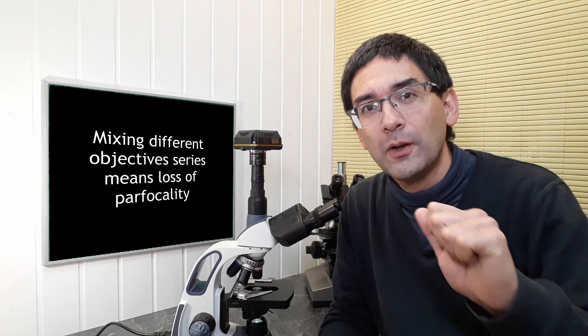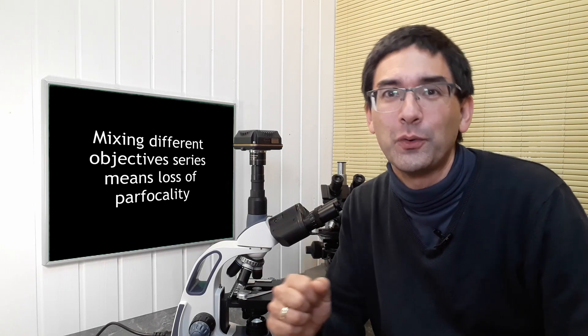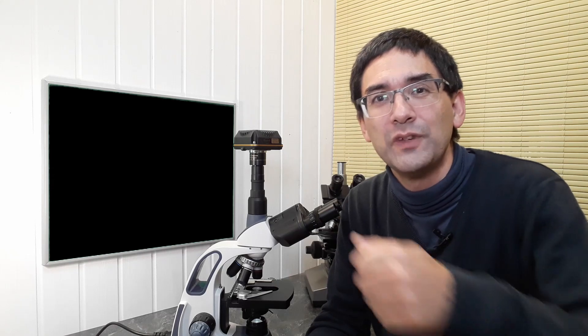And this means that if you switch objectives from 40 times to 60 times, you lose focus and you have to refocus. And that is a problem sometimes because in this case it was possible to refocus because I had to then raise the stage a little bit so the distance was actually too large. That's not a problem really, but what happens if the distance is too short if it's the other direction? You risk hitting the stage or the slide rather when you're changing in the other objective if there is no parfocality.